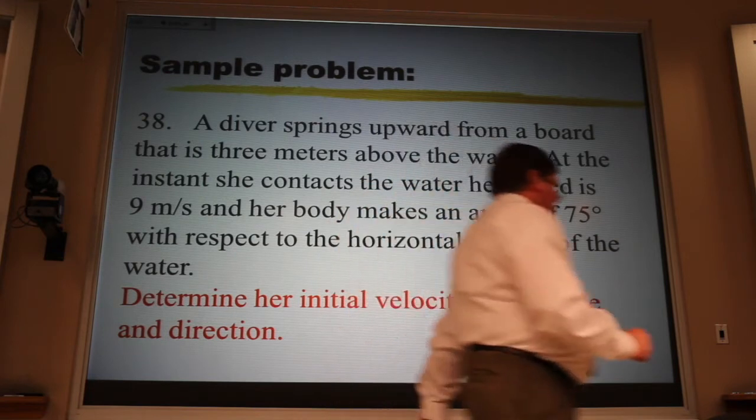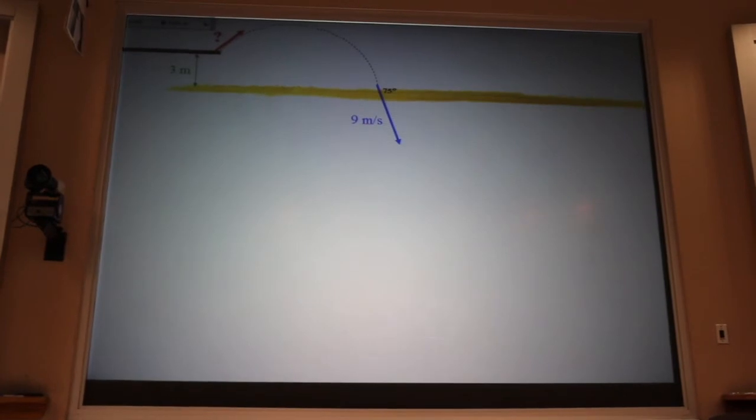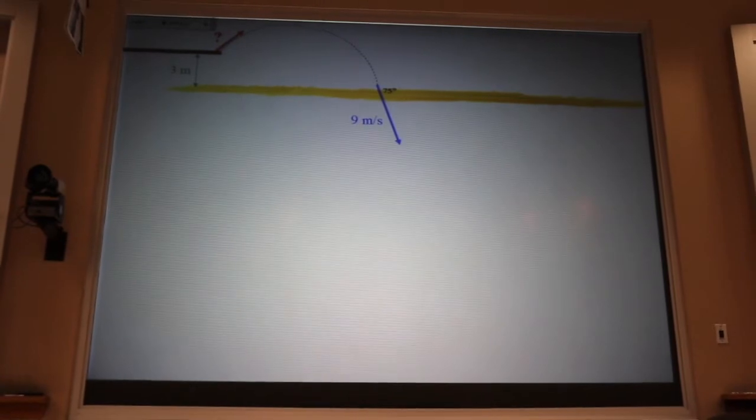Now, let's do this problem together. There's the board. It's three meters above the water. I don't know why the water is yellow. Maybe not enough chlorine. She dives in a parabolic arc, and when she enters the water, her body is moving 75 degrees with respect to the horizontal surface of the water.